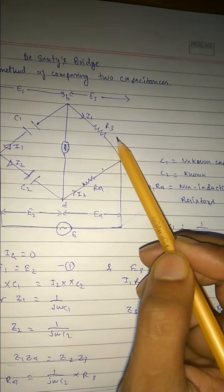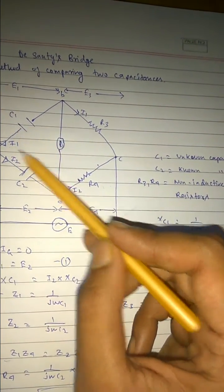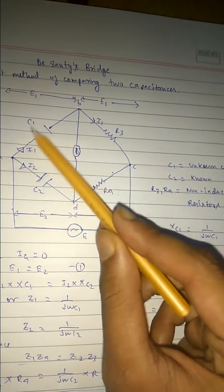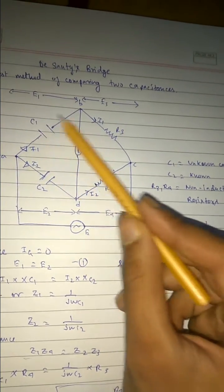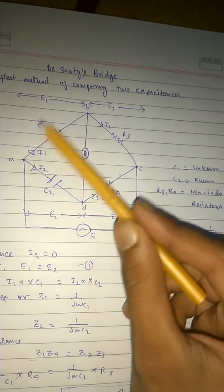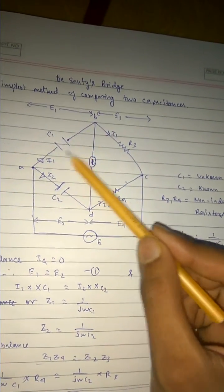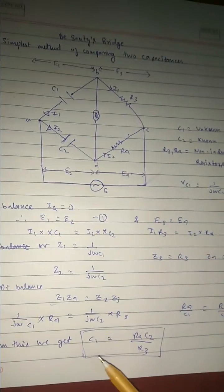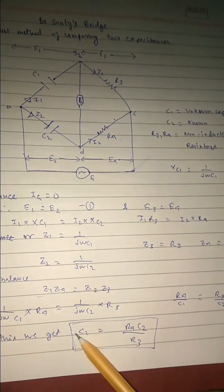This value we will be getting and we need to find the value of this capacitance. So basically we did the whole process to calculate this C1. So by doing this we get the value of capacitance.